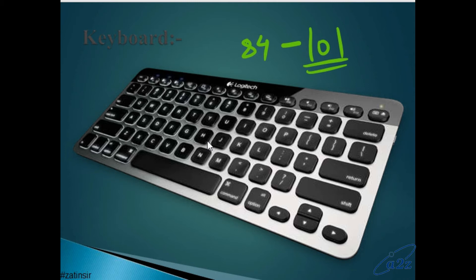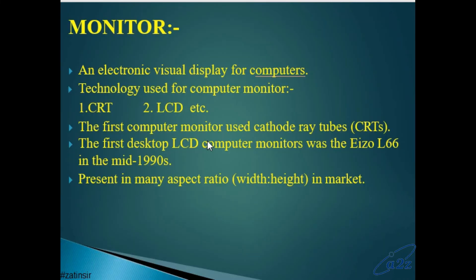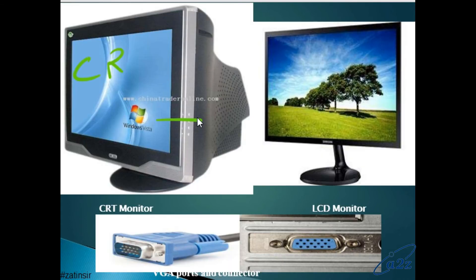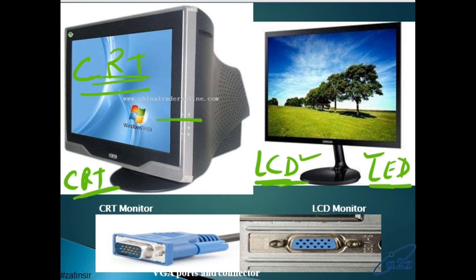Next is monitor. Monitor ki two categories: CRT and LCD. This is your CRT monitor, this is LCD and LED. Both the technologies are different. LCD ki technology alag hoti hai, LED ki technology alag hoti hai. LCD LED ko flat screen monitor bhi bola jaata tha. Earlier it was cathode ray tube. CRT means cathode ray tube, usse image banti thi. Now LCD screen aur LED screen se image form hoti hai, jo bhi aap monitor display device use karte ho.